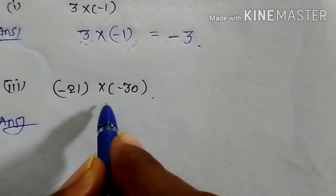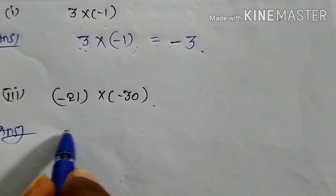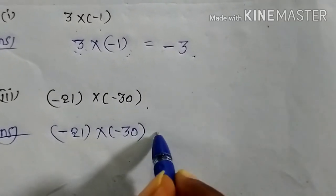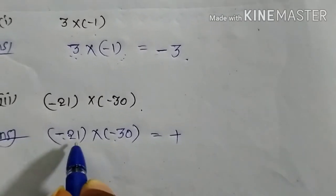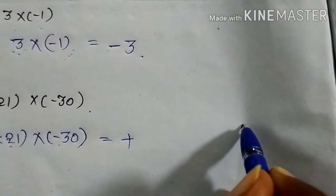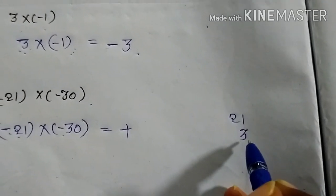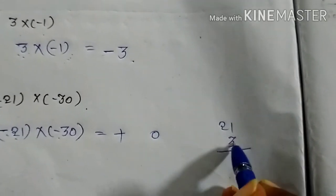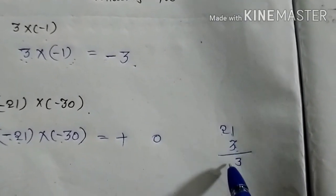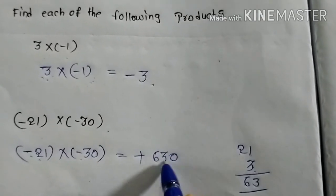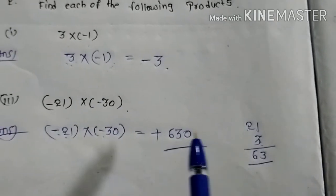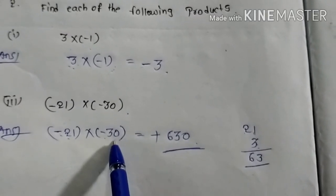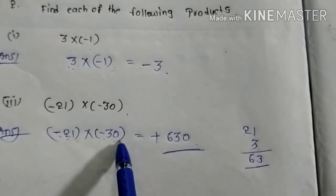Next one: minus 21 into minus 30. Minus into minus gives plus. 21 into 30 — I will do 21 into 3 first: 3 ones are 3, 3 twos are 6, so 21 into 3 is 63. Then append the zero for the 30: your answer is plus 630. The product of two negative integers is always positive.